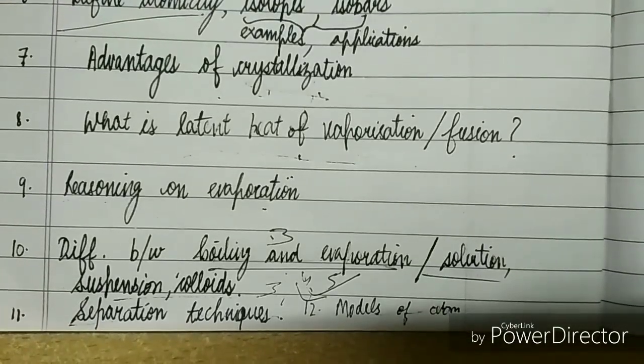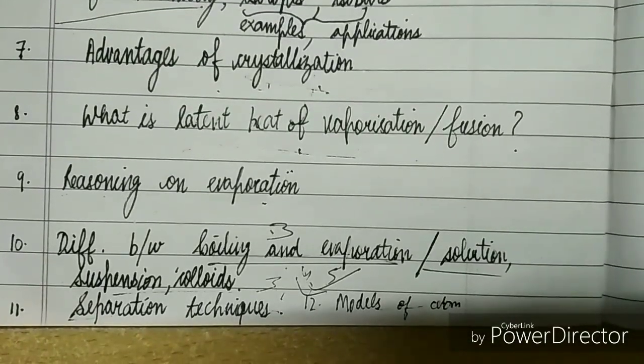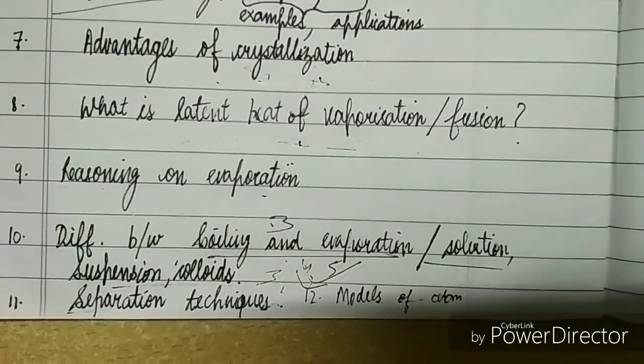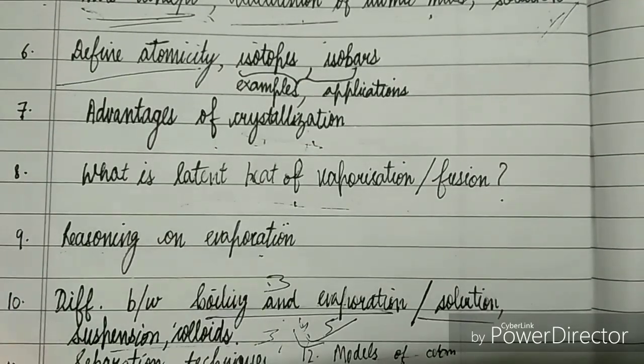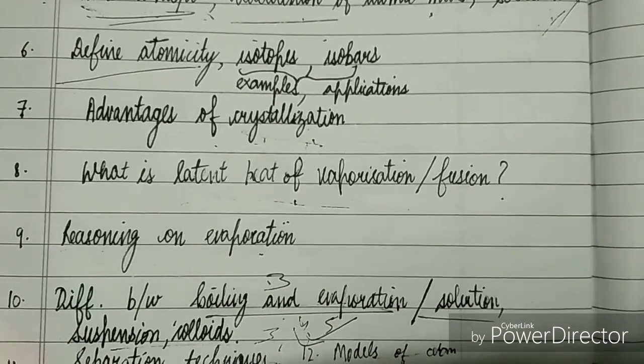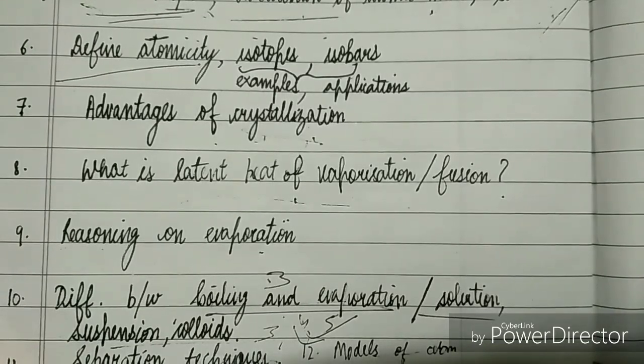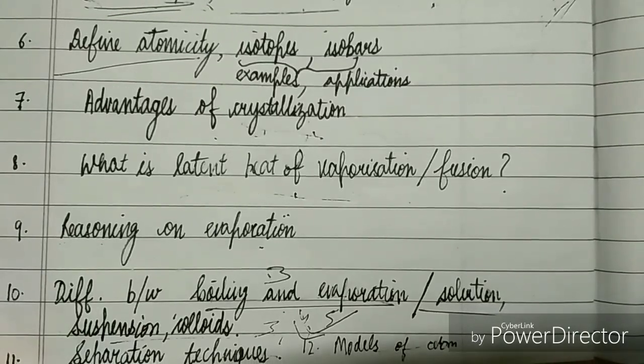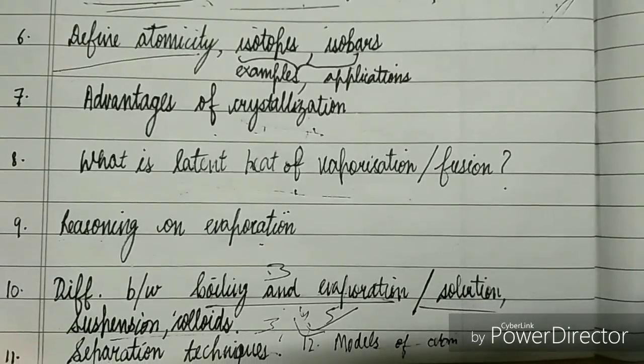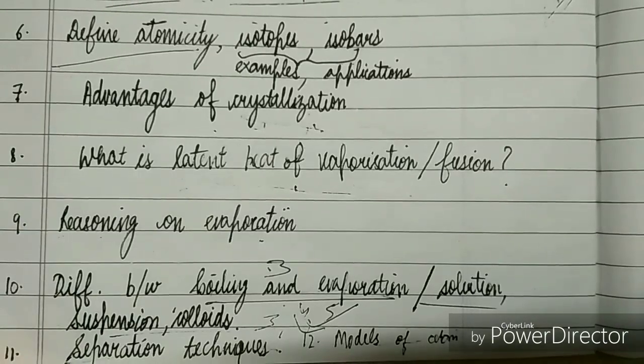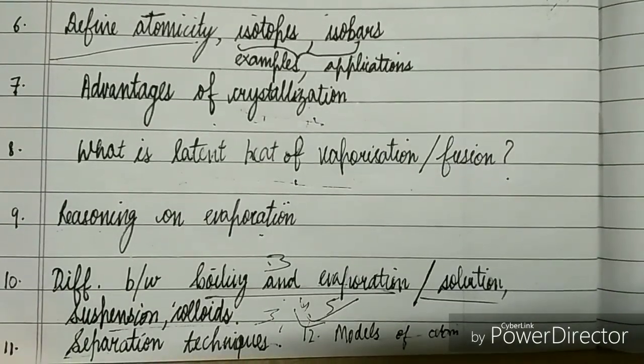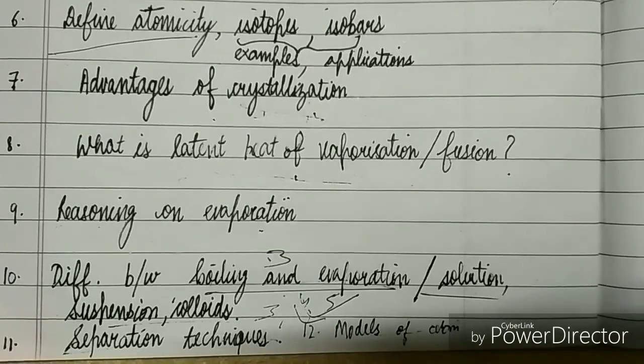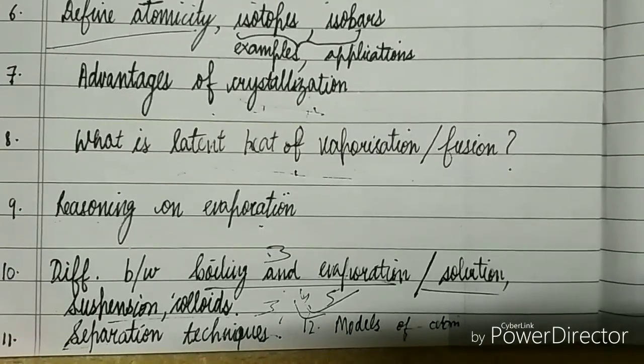The last part is about models of atoms. We have already discussed Rutherford's. You should be clear with Thomson's and Rutherford's, of course, and Bohr's model of atoms. You should be knowing about what they were, their observations or their drawbacks and limitations. You should be clear with all these things.